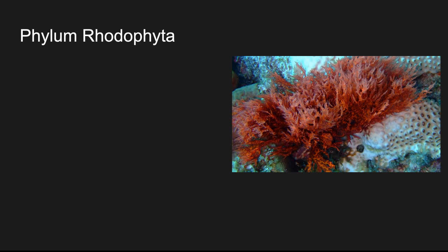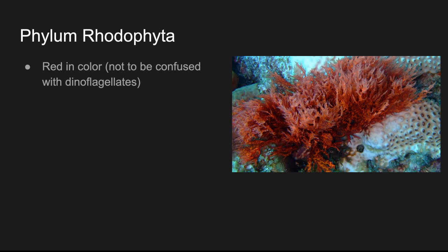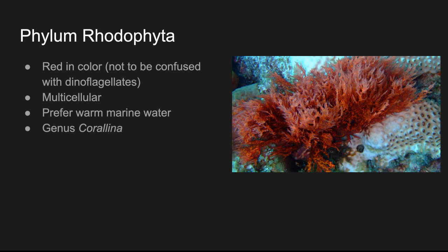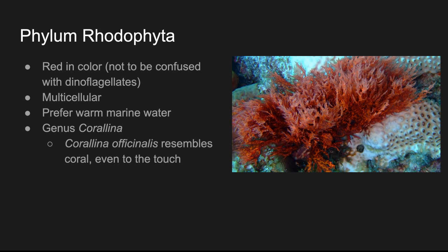The last phylum we're going to talk about today is called phylum Rhodophyta. 'Rhodo' means red or rosy, so they are red in color — not to be confused with dinoflagellates, which also have a red color. They are multicellular and they prefer warm marine water, whereas Phyophyta preferred cold marine water. One example out of Rhodophyta would be genus Coralina. Coralina officinalis resembles coral even to the touch — that red scrubby coral-looking thing in the picture really looks like coral, but it is not a coral. That is a multicellular protist.